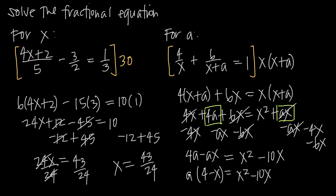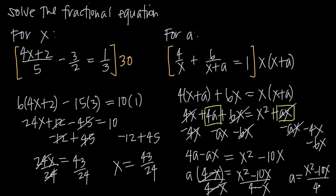With a factored out, we divide both sides by (4 minus x), which cancels the (4 minus x) on the left-hand side, leaving just a. So our final answer is a equals x squared minus 10x, all divided by (4 minus x).